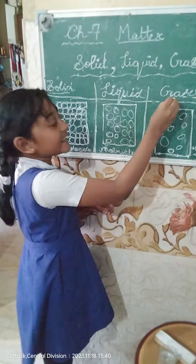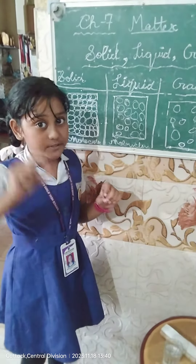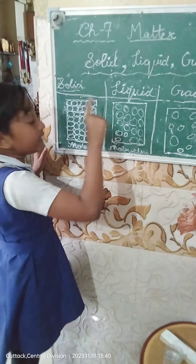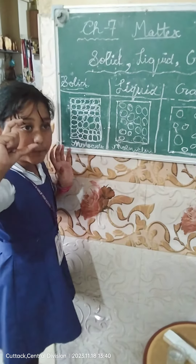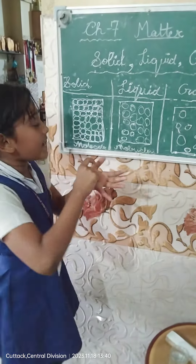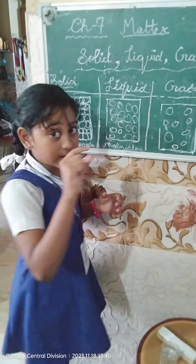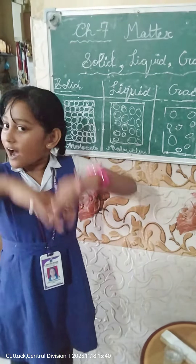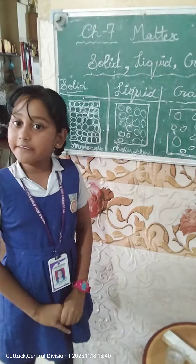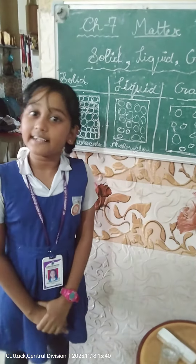The best examples of solid, liquid, and gas is ice — ice cubes. It is a solid. When it melts, it becomes liquid. And when we boil it, it comes out as gas. Hope you like my video. Please like and subscribe to my channel.